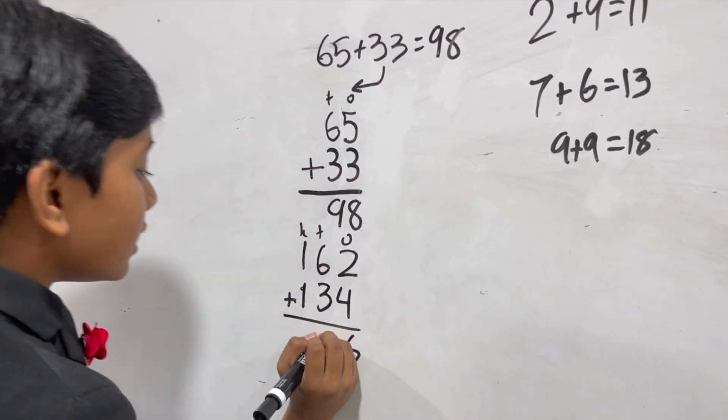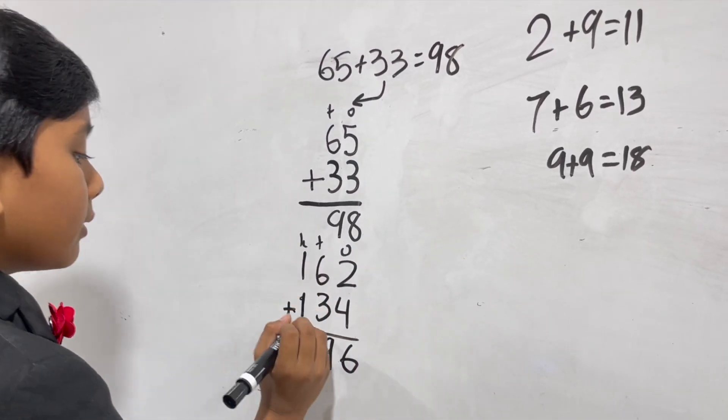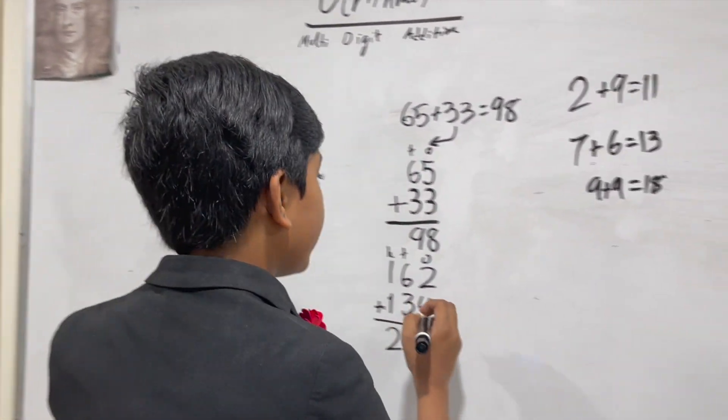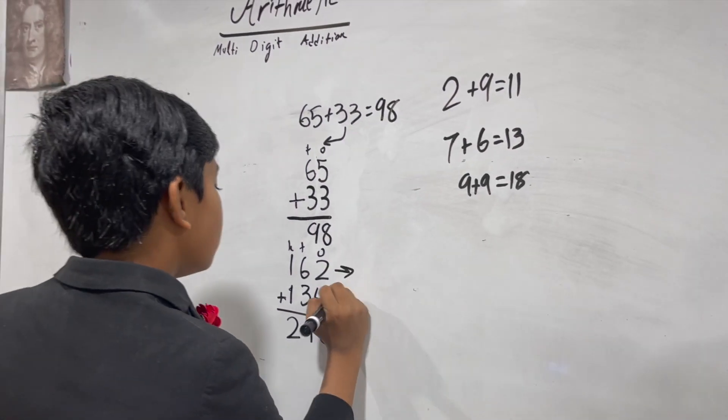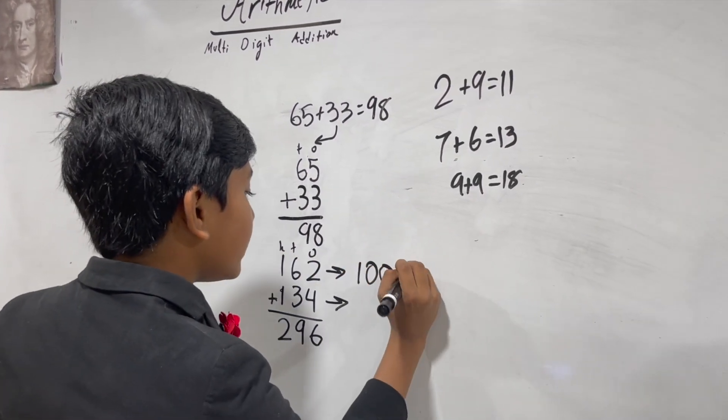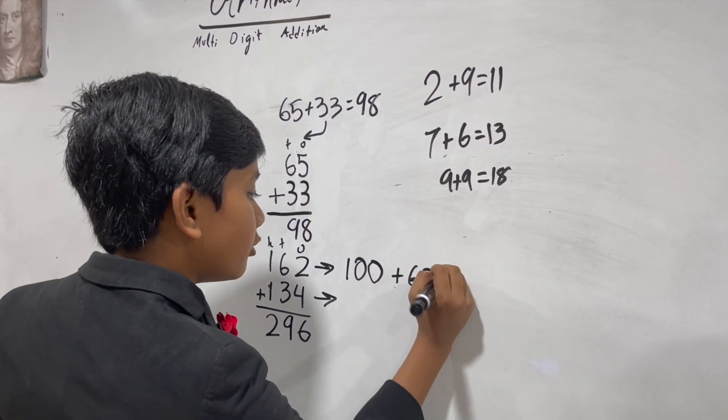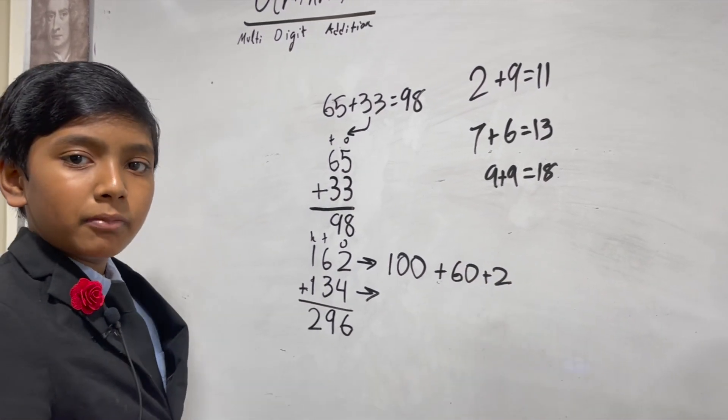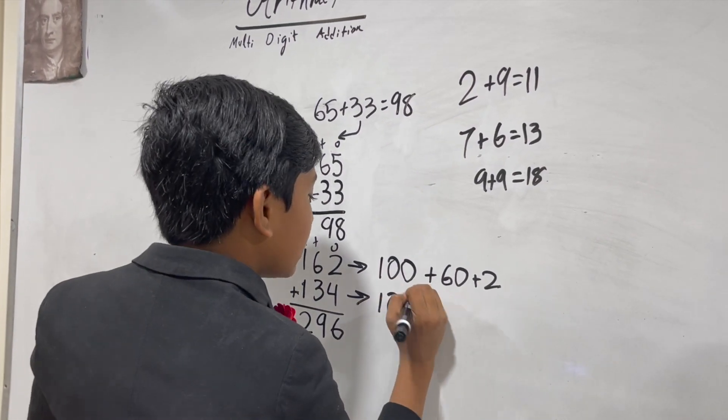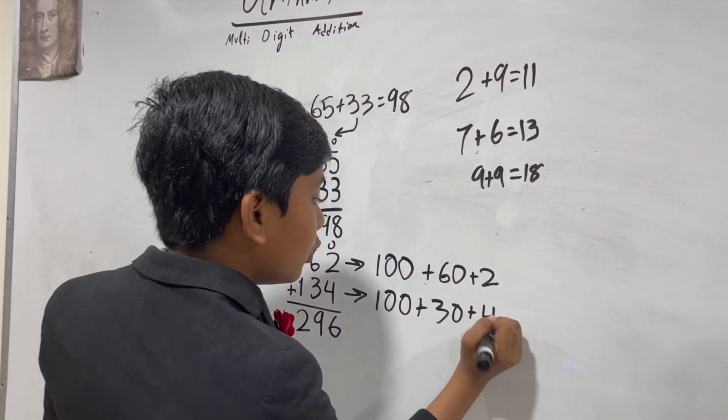I can actually explain the reason why this works. So this is equal to 100 plus 60 plus 2 in expanded form. We talked about place value in another video, go check that out. This is 100 plus 30 plus 4.